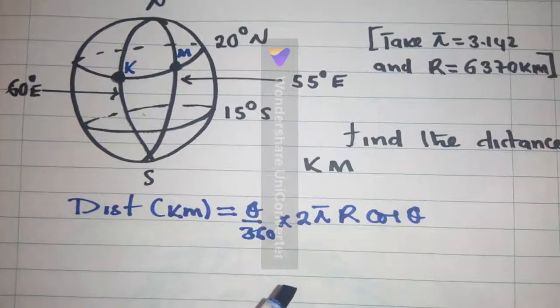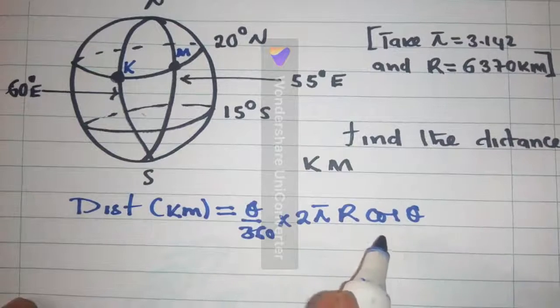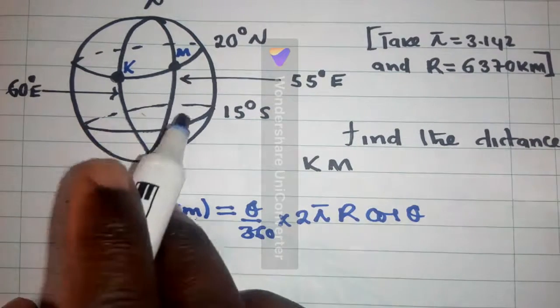So, if you watched the previous video, along the longitude, there was no cos theta. But this time around, there is cos theta, because it's along the latitude.